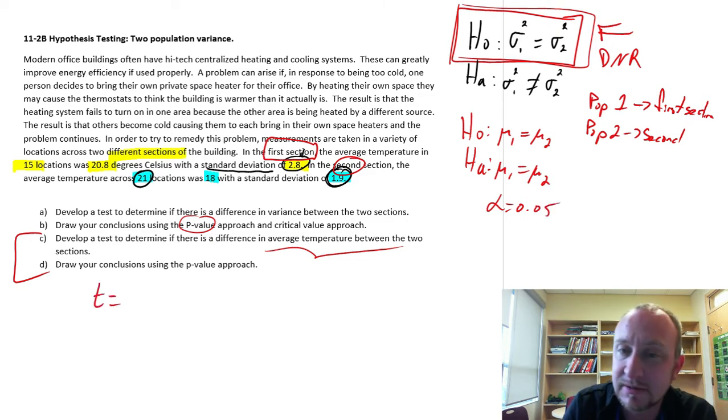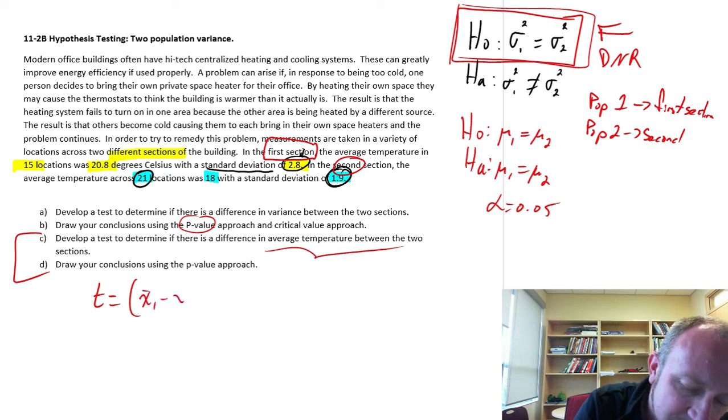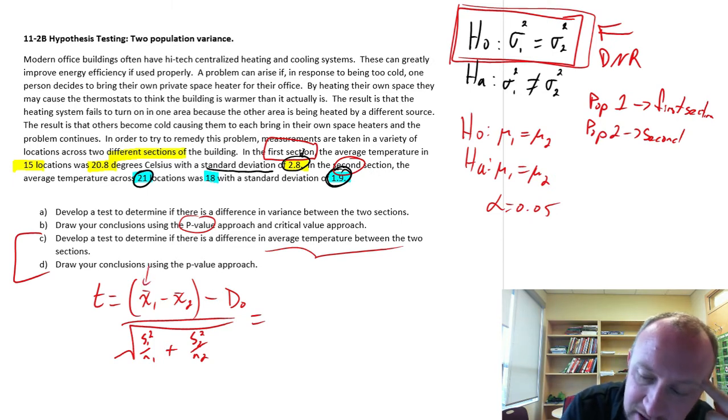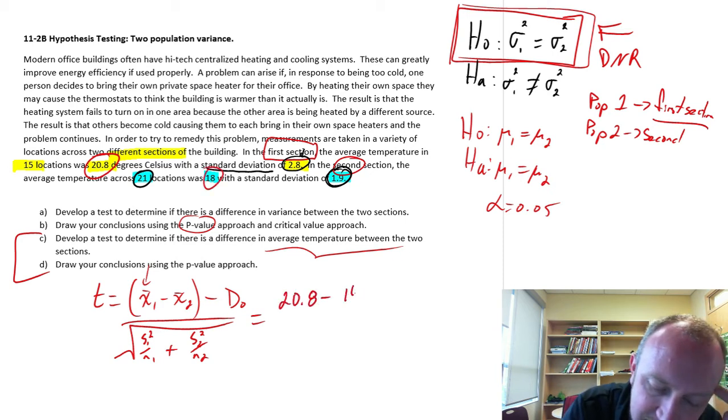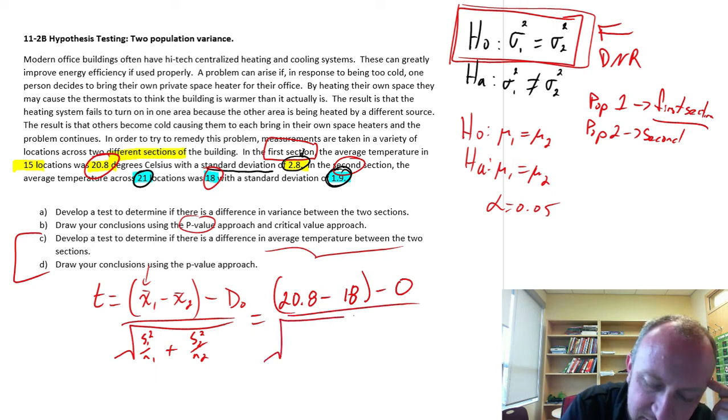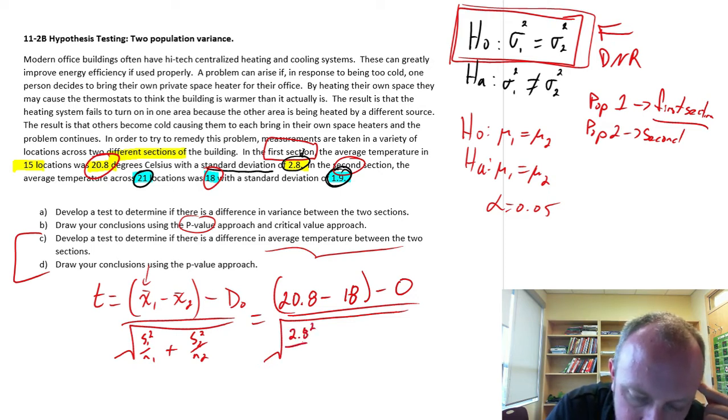Now we just have to go ahead and calculate our statistics. So here we have x̄₁ - x̄₂ minus some hypothesized difference, divided by that standard error, √(s₁²/n₁ + s₂²/n₂), and we just have to plug in our values. So we have our sample for population 1, which I said is the first section, so that's the sample mean of 20.8 minus the other was 18. Our hypothesized difference, we're just testing if they're different, not any particular magnitude of difference, so that's just 0.